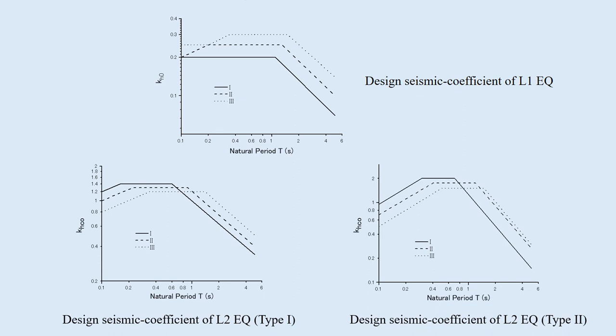L2 earthquake has two types. Type 1 is the plate tectonics earthquake, and type 2 is the active fault earthquake. The standard seismic coefficients for L2 earthquake, type 1 and type 2 are shown in these figures. These are much, much larger than L1 earthquake.